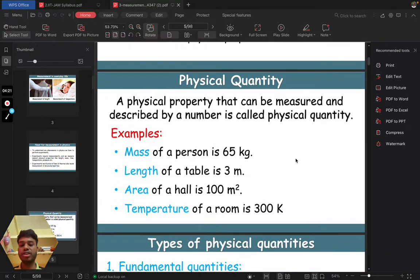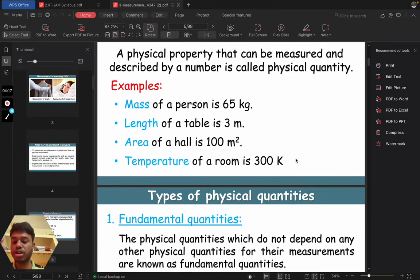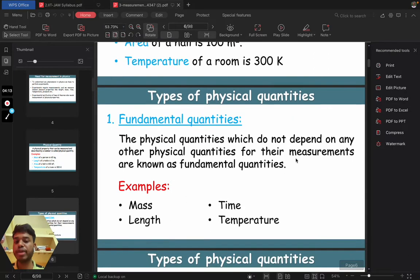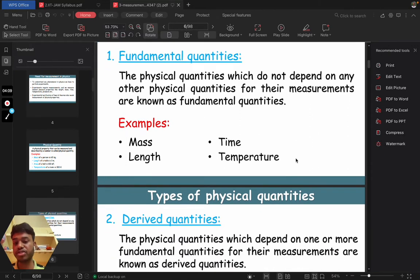Similarly, you can say the area of a hall or a temperature of a room. These are all physical quantities. Now there are two types of physical quantities. One is fundamental quantity and another one is derived quantity. What is the fundamental quantity?